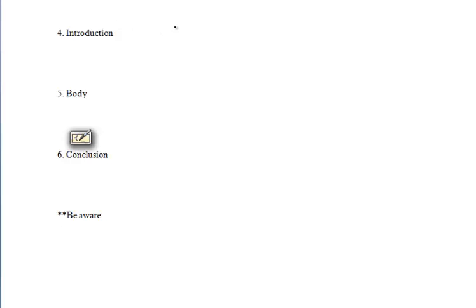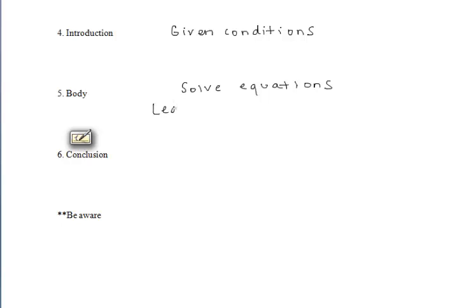In this paragraph proof you want to have an introduction. In this introduction you can include any given conditions or anything that you immediately draw from the given information. Second, you want the body of the paragraph. In the body of the paragraph proof you'll solve any equations and also list any steps that lead to the conclusion. In the body you'll still be using your if-then statements like we discussed in section 1.4.